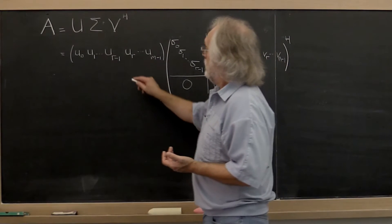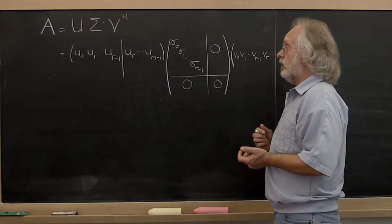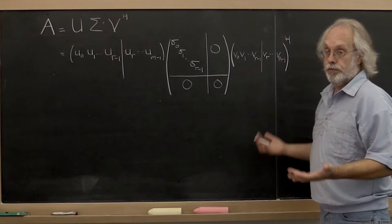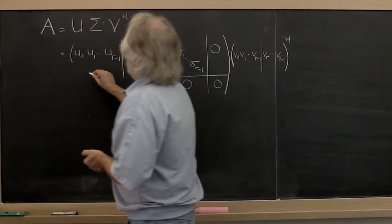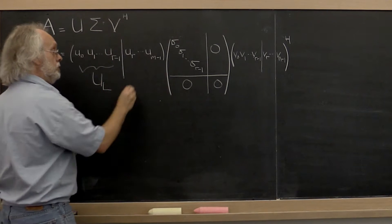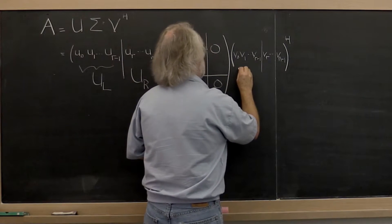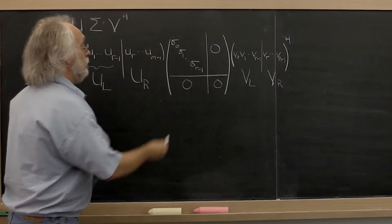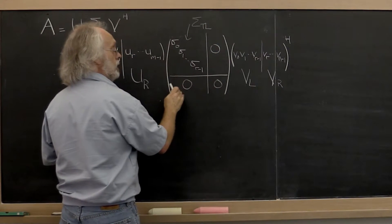Correspondingly we could partition our matrix U into the first r columns and then the rest of them, and we can partition our matrix V into the first r columns and then the rest. We could label these U_left, the left part of the partitioned matrix U, U_right, V_left, and V_right. And we could call this region sigma_top_left where we have top left, top right, bottom left, bottom right.